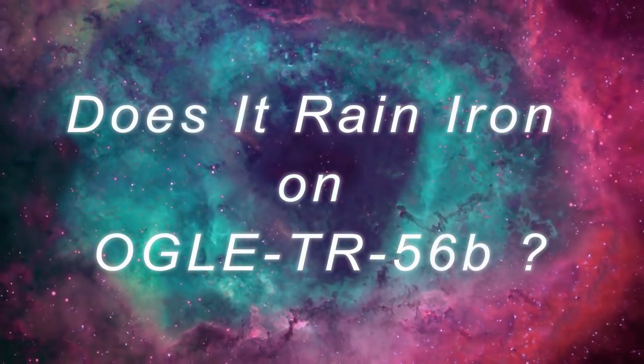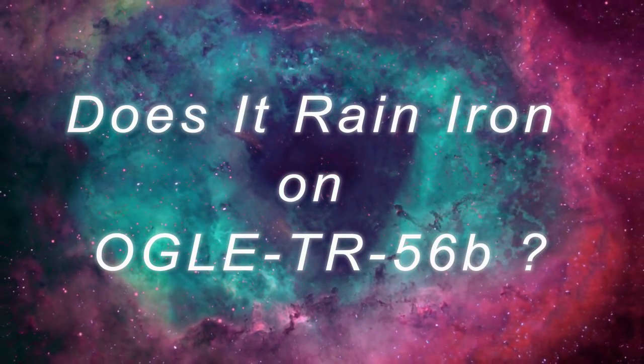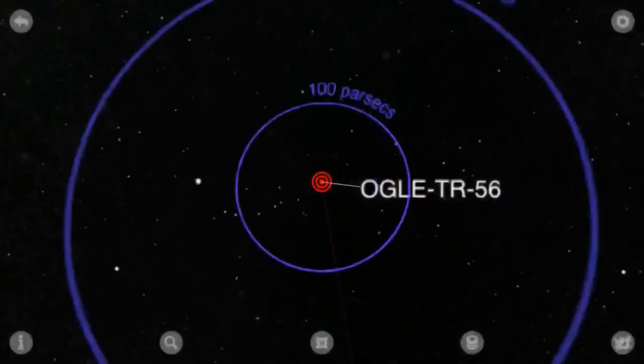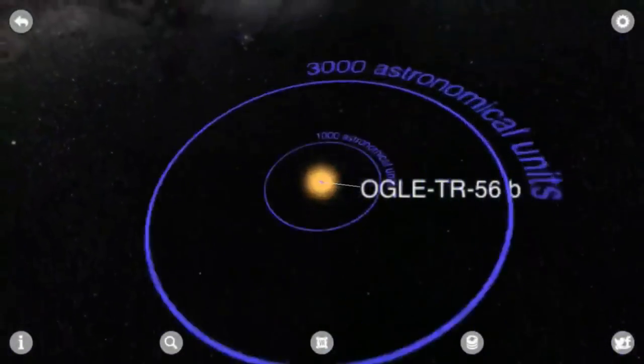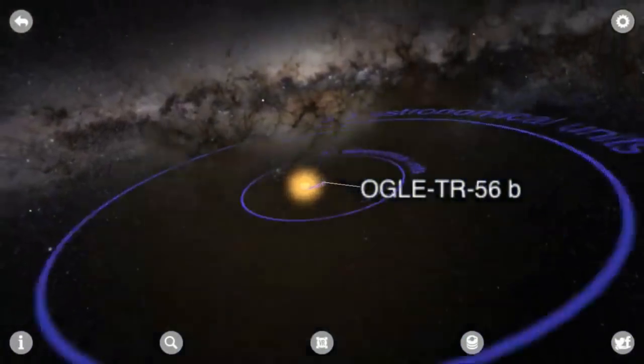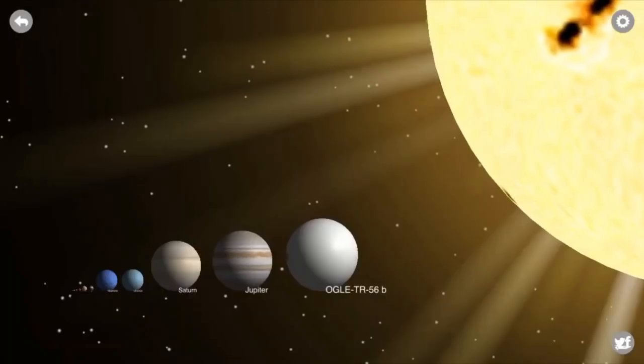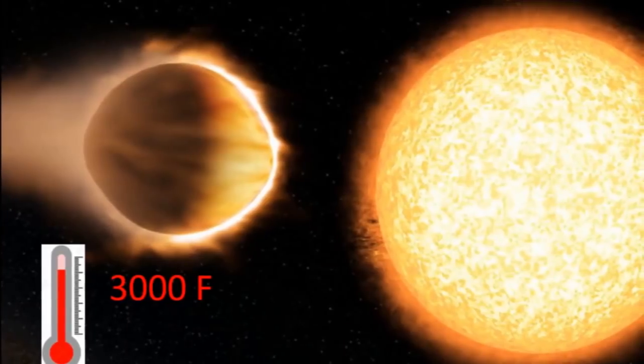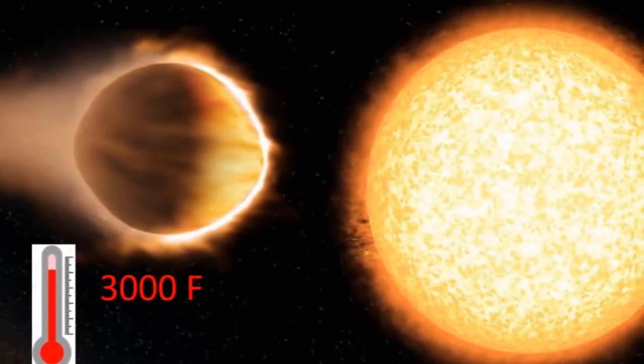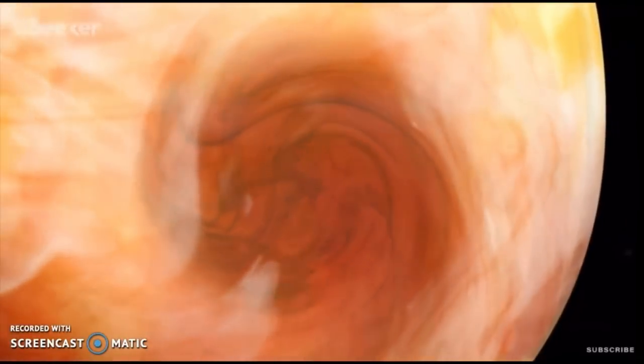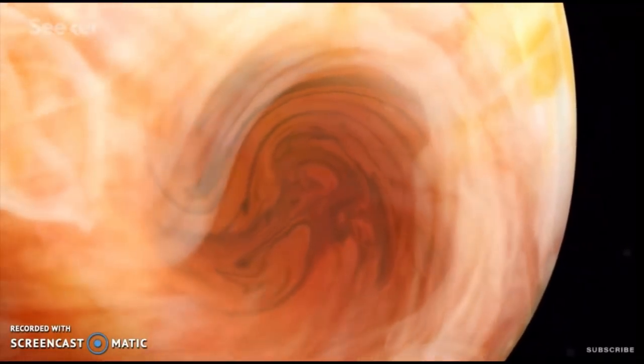Does it rain iron on OGLE-TR-56 b? Out of all the planets here, we know the least about OGLE-TR-56 b. It's estimated that the temperature on the surface of the planet is almost 3000 degrees Fahrenheit, which is theoretically just right to form clouds not of water vapor, but of iron atoms.